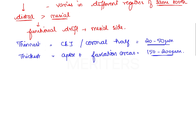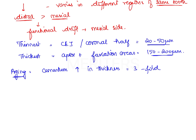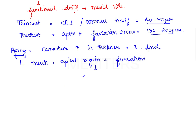With aging, the cementum increases in thickness by threefold. As the patient ages, cementum thickness increases mainly in the apical region and in the furcation areas, and this is correlated with passive tooth eruption.